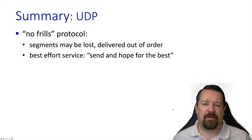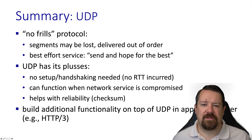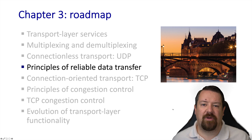So a quick summary of UDP: it's a no-frills protocol. It provides the multiplexing and demultiplexing needed to get messages to the correct sockets, and it has the benefits of low complexity and high efficiency, which are valuable to certain applications. Applications that don't get the performance desired from TCP can implement reliability and congestion control functionality on top of UDP. That wraps up our discussion of UDP. In the next video, we'll start looking at principles of reliable data transfer.